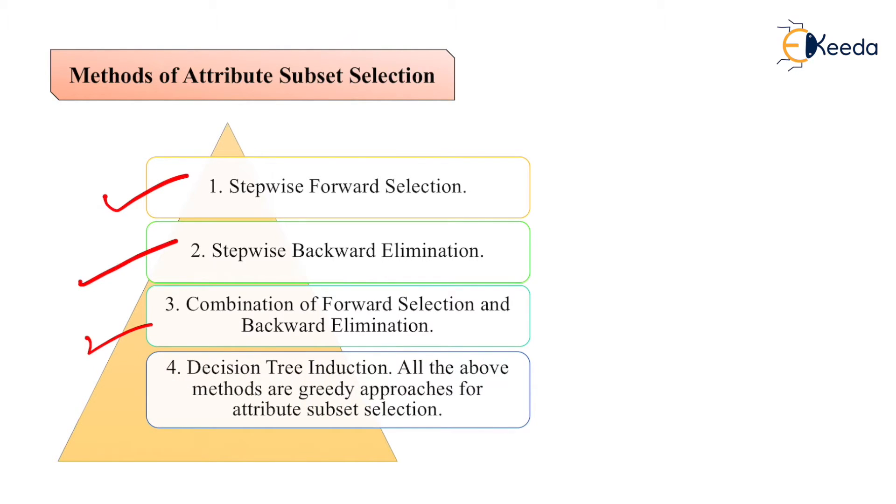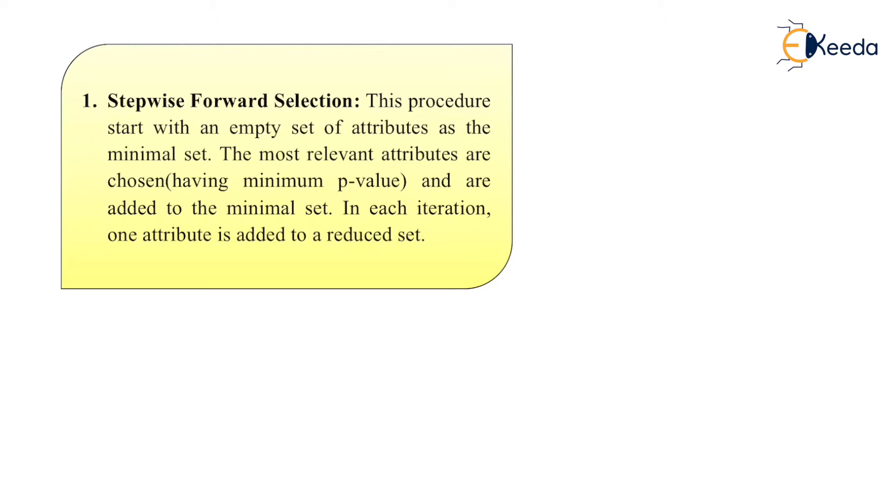All the above methods are greedy approaches for attribute subset selection. Stepwise forward selection: this process starts with an empty set of attributes as a minimum set, and the most relevant attributes are chosen, having minimum p-value, and are added to the minimal set. In each iteration, one attribute is added to the reduced set.